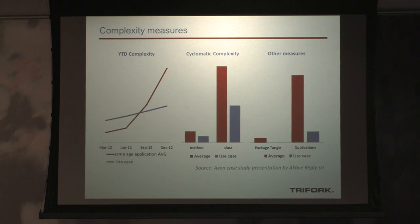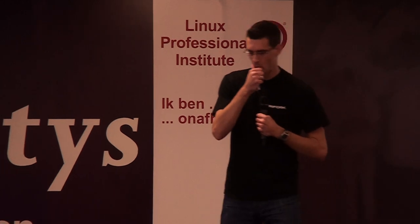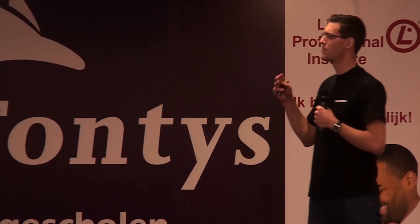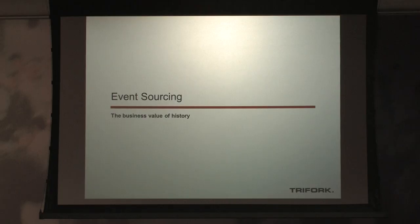Some Italians wanted proof that CQRS-based applications are more complex at the start but grow less complex over time compared to a traditional layered architecture. They started measuring in Sonar. The grey lines and boxes are for a CQRS-based application and the orange boxes for a traditional application — confirming that gut feeling. What they also noticed is that cyclomatic complexity was far less. This was organic growth without extra refactoring efforts.